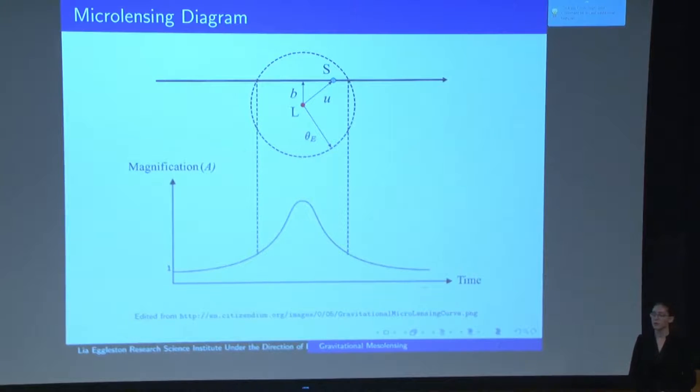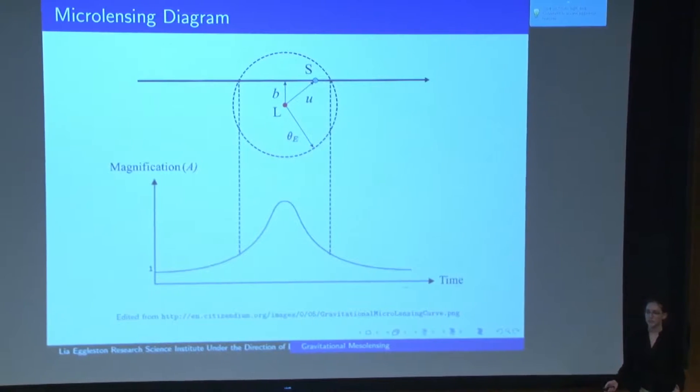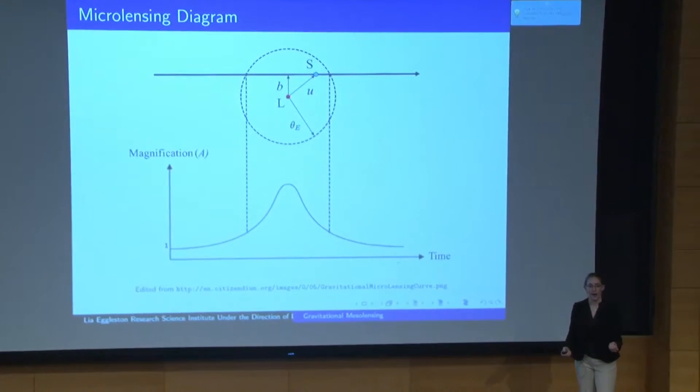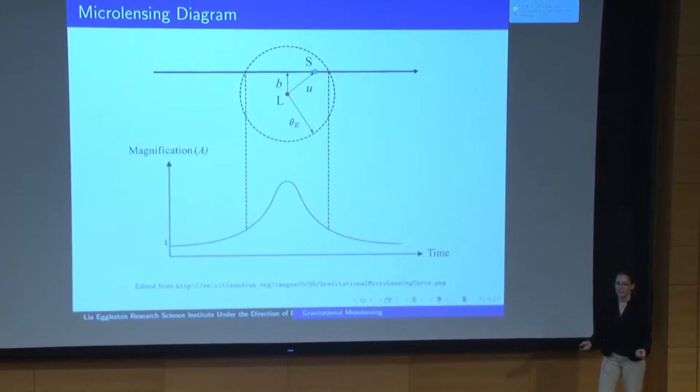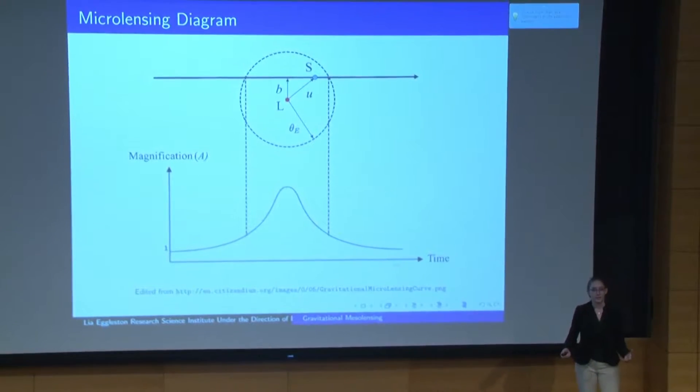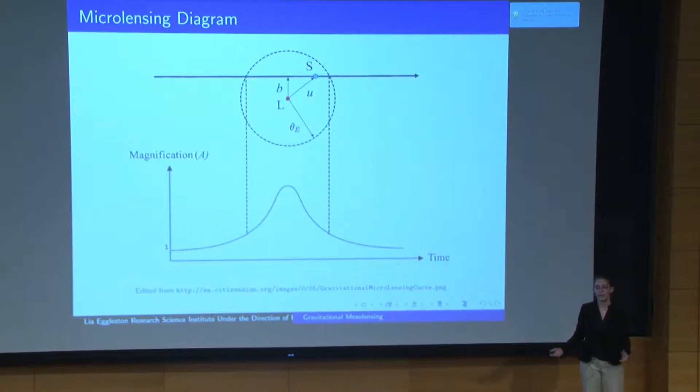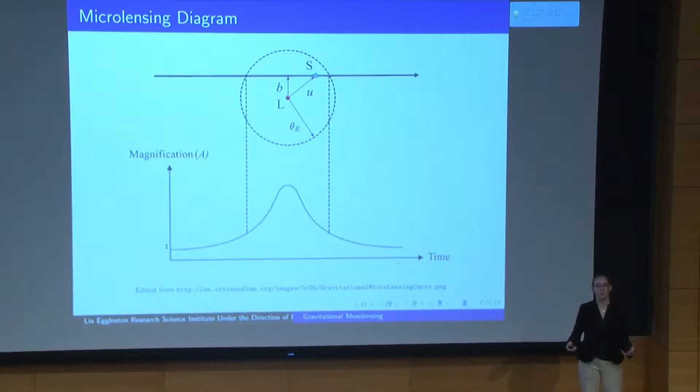And in this project, I was going through OGLE data to look for another subtype of microlensing events called mesolensing, which is essentially just where the lens is bright and nearby. And the implications of that is that we can essentially study the events in more detail and learn the most about the characteristics of the lens in these mesolensing events.